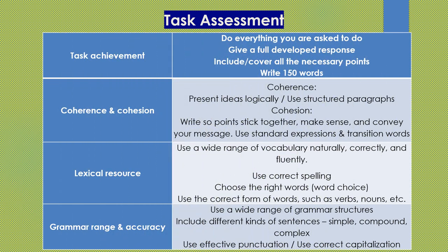Let's take a look at the task assessment. Task achievement is 25%, in which you need to answer everything you're asked to do in the question. The other 25% is coherence and cohesion — use structured paragraphs and make standard expressions. The next 25% belongs to lexical resource — use a wide range of vocabulary. And the last 25% is grammar range and accuracy — include different kinds of sentences ranging from simple, compound, and complex.